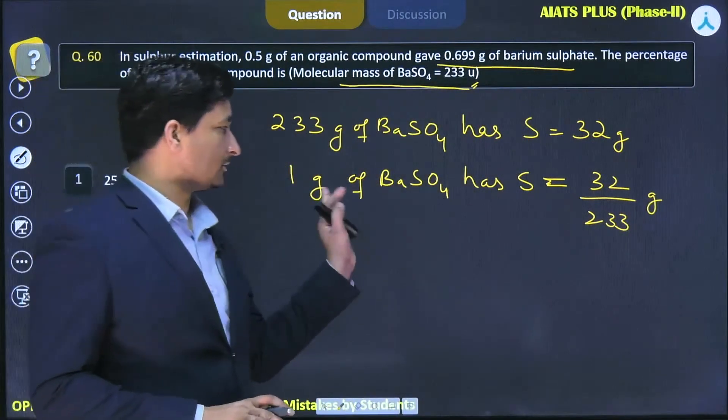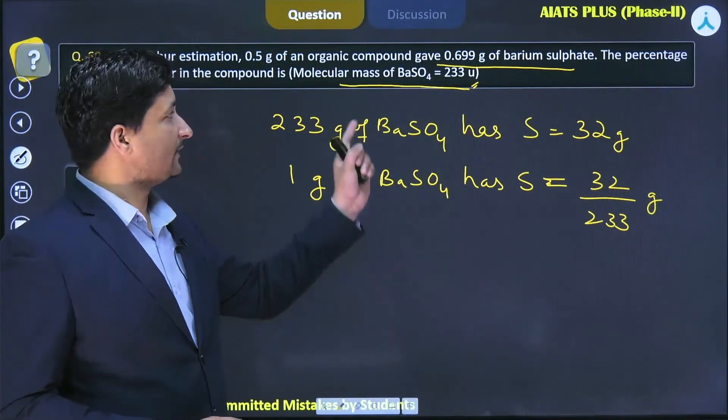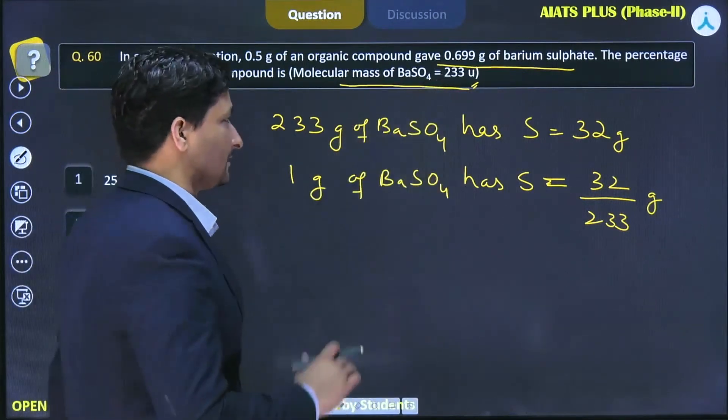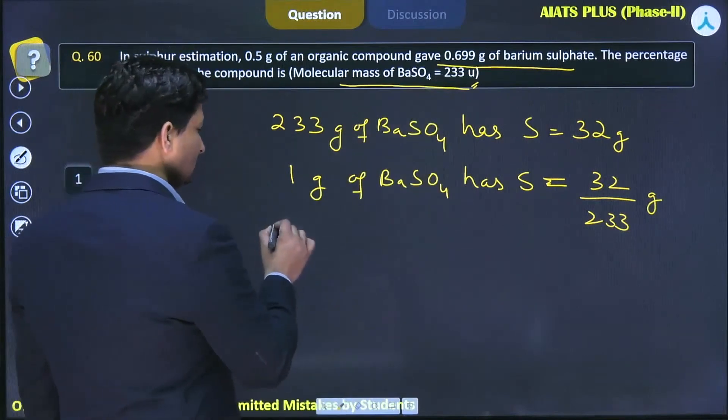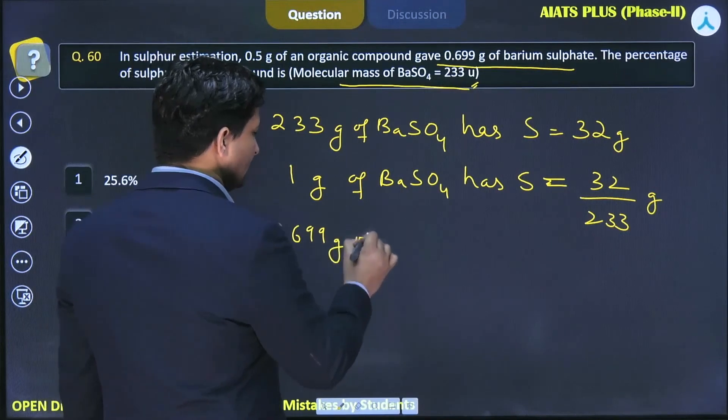This is the actual amount of sulfur present in 1 gram of barium sulfate. But how many grams of barium sulfate did we actually obtain? 0.699 grams. So we multiply this by 0.699.